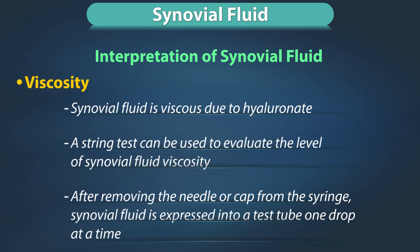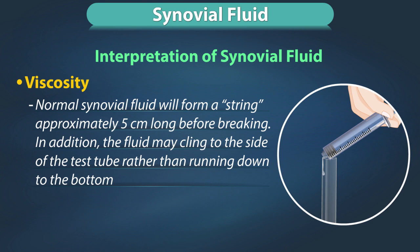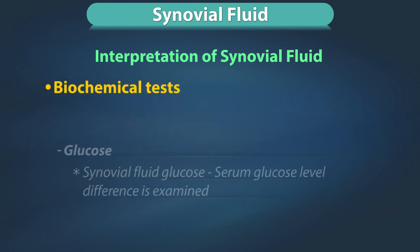Viscosity: synovial fluid is viscous due to the presence of hyaluronate. A string test can be used to evaluate viscosity. After removing the needle or cap from the syringe, synovial fluid is expressed into a test tube one drop at a time. Normal synovial fluid will form a string approximately 5 cm long before breaking, and the fluid may cling to the side of the test tube rather than running down to the bottom. Synovial fluids with poor viscosity will form shorter strings, as seen in inflammatory conditions.